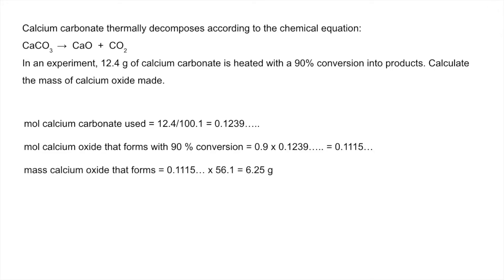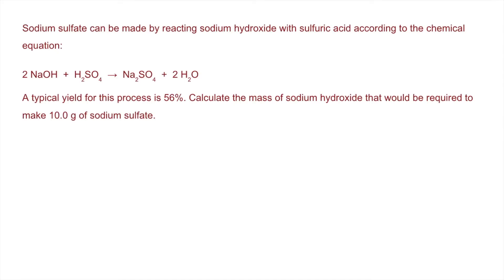Moving to the final question, the trickiest. We've got the yield and need to work backwards to find the starting mass of sodium hydroxide needed to make 10 grams of sodium sulfate. First, work out moles of sodium sulfate we're trying to make: mass over Mr.